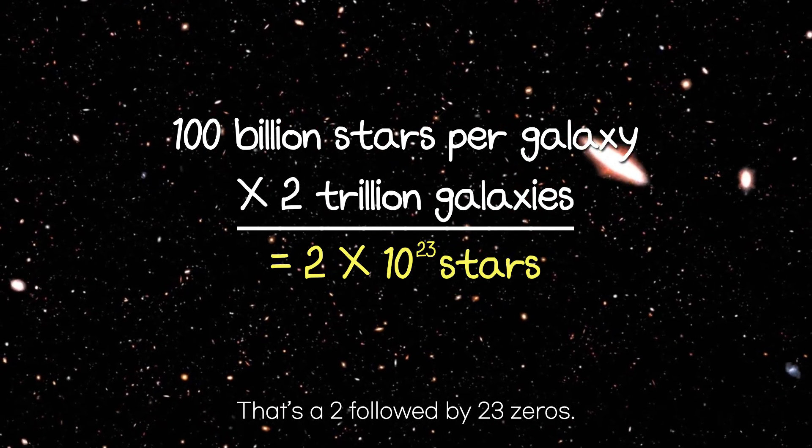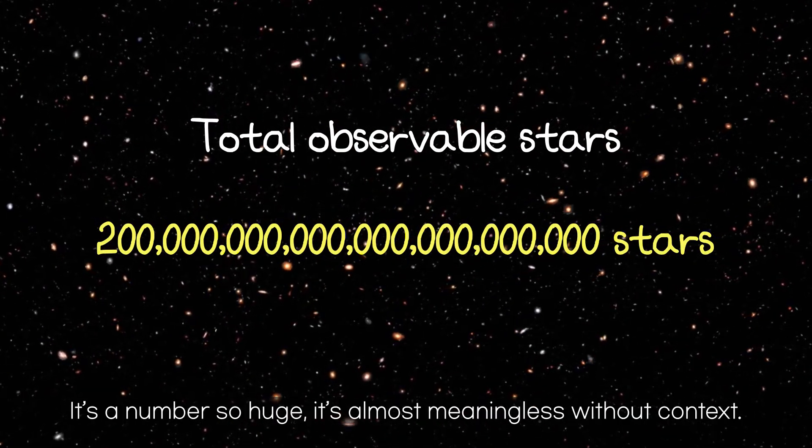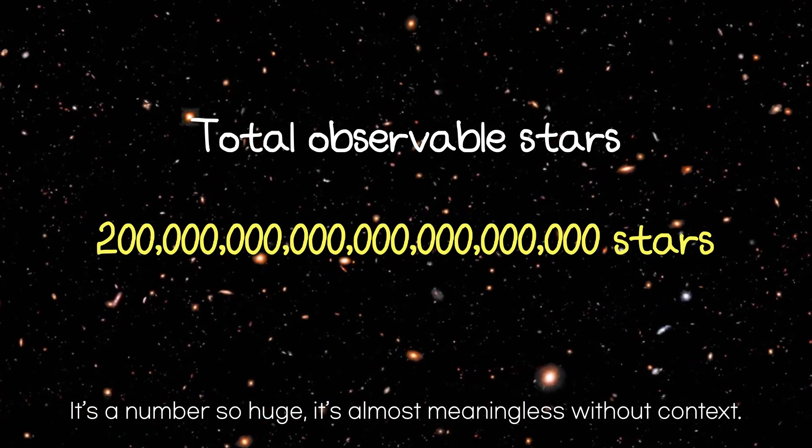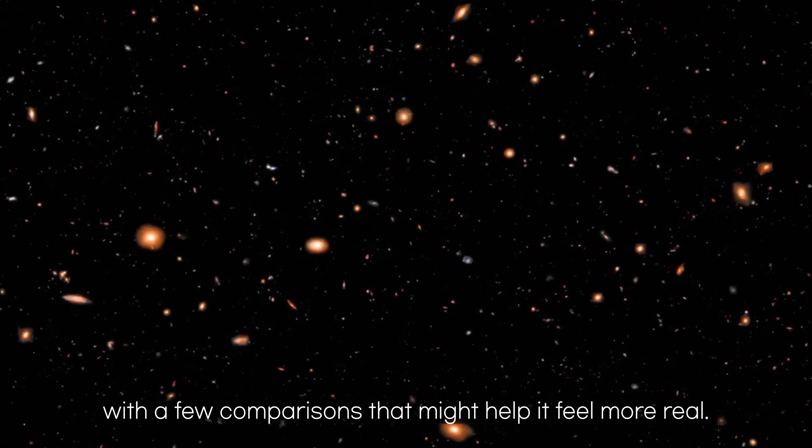That's a 2 followed by 23 zeros. It's a number so huge, it's almost meaningless without context. So let's try to make sense of it with a few comparisons that might help it feel more real.